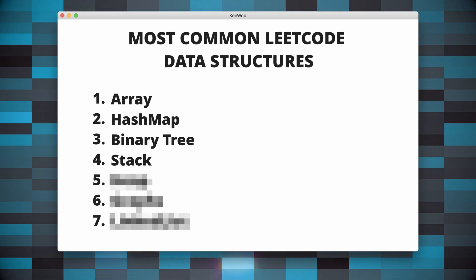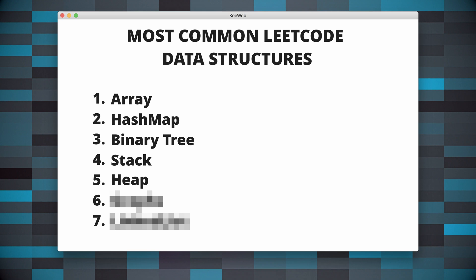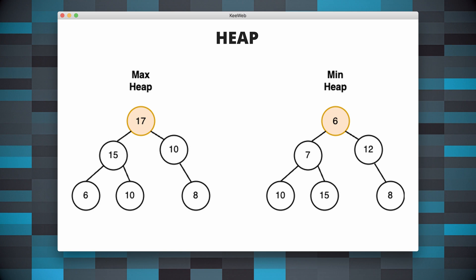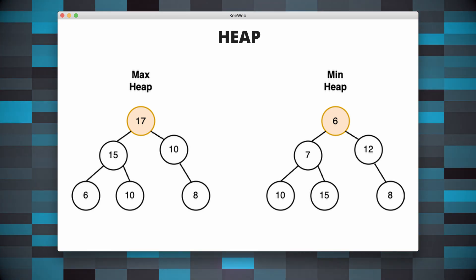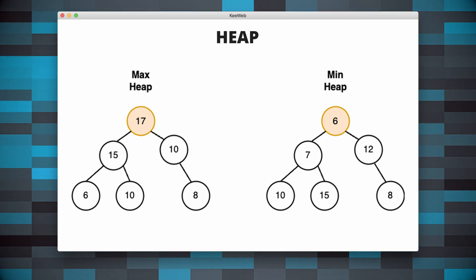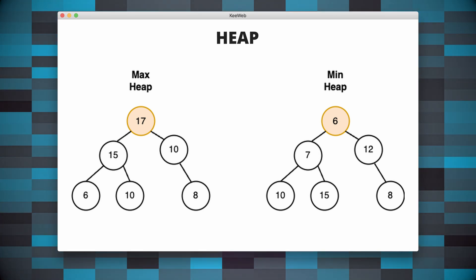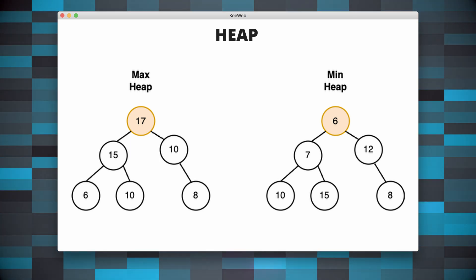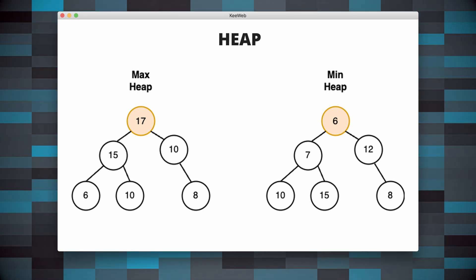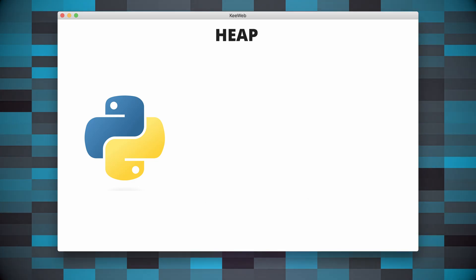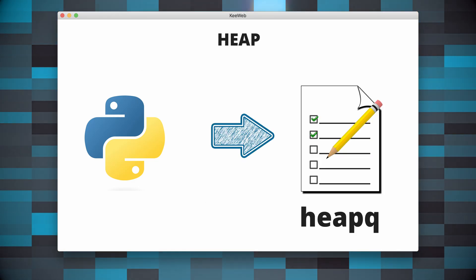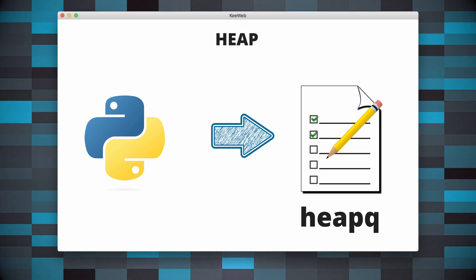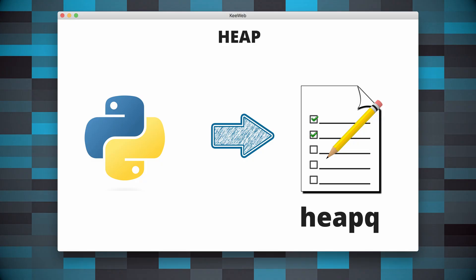Let's now talk about heaps. A heap is a specialized tree-based data structure that satisfies the heap property. A heap can be of two types: a max heap and a min heap. A max heap is a complete binary tree where the root node is the largest element, whilst in a min heap the root node is the smallest element. Python provides a heap queue module in the standard library, which offers a min heap implementation using a list. We can create a min heap in Python in the following way.